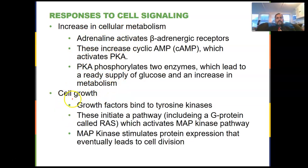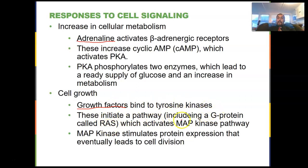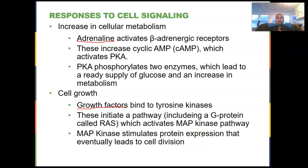Another cellular response we can talk about is cell growth. Growth factor is another ligand, and in this case the growth factor binds to tyrosine kinase receptors, which initiate a signaling pathway. This involves a G-coupled protein called RAS, which activates the MAP kinase pathway. The MAP kinase pathway stimulates protein expression, which then leads to cell division. So we can have different responses: with adrenaline, the response is a supply of glucose, while growth factors binding to these receptors results in an increase in cell division.